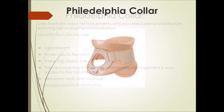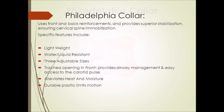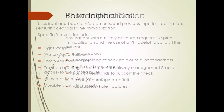This is an example of a Philadelphia Collar. The Philadelphia Collar uses front and back reinforcements and provides superior stabilization ensuring cervical spine immobilization. It is lightweight, water and liquid resistant. It comes in three adjustable sizes. It has a trachea opening, it alleviates heat and moisture, and is made of durable plastic which limits motion.